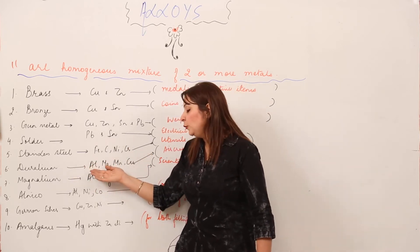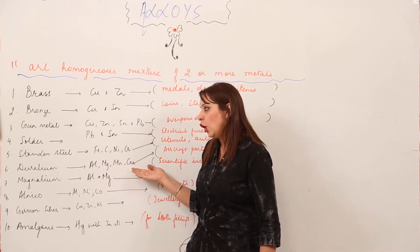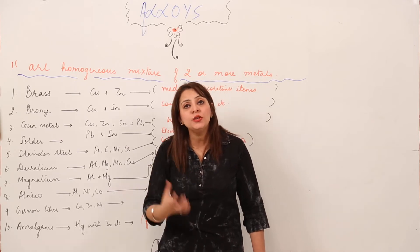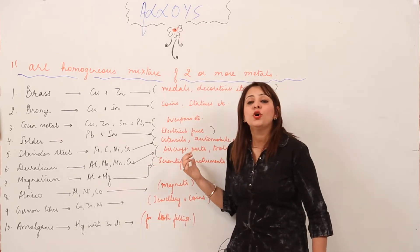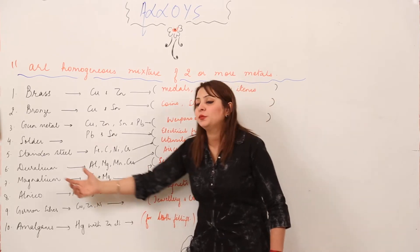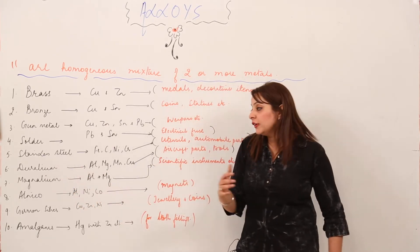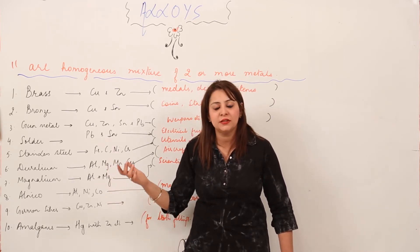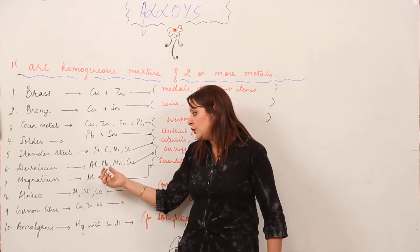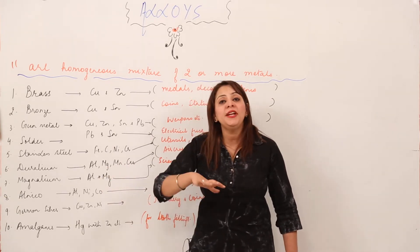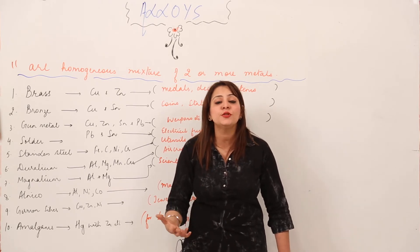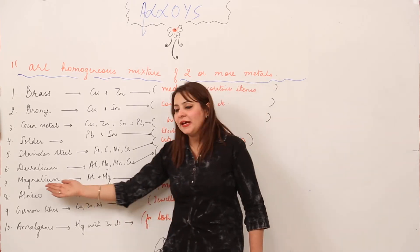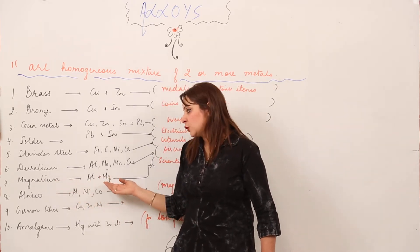Next is duralumin, which plays a very important role. It is an alloy of aluminium in which aluminium is mixed with magnesium and copper. It has the property of being lightweight, and due to this property it is used in making aircraft parts. We cannot use aluminium alone, but when mixed with magnesium and copper its properties are greatly improved — enough to be used in making aeroplane parts.